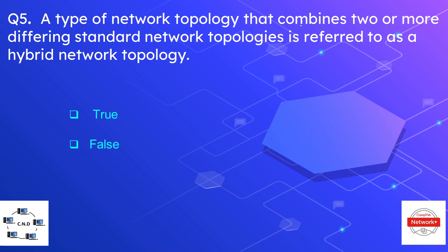Question number five: a network topology that combines two or more differing standard network topologies is referred to as a hybrid topology — true or false? The correct answer is true. When two network topologies are combined, the network is known as a hybrid network.